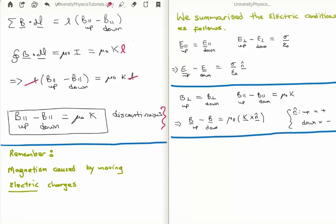Before we continue, I'd like to remind you that we do not have any sources of magnetic field and that magnetism is caused by moving electric charges. As a result, we don't have magnetism for stationary electric charges. Now for a small bit of revision: when we discussed the electrostatic boundary conditions, we were able to summarize the perpendicular and tangential conditions using one condition, shown in the top right of your screen. We saw that the tangential component of the electric field is continuous, but the perpendicular component is in fact discontinuous.